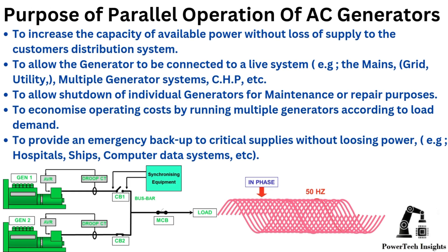Purpose of parallel operation of AC generators: To increase the capacity of available power without loss of supply to the customer's distribution system. To allow the generator to be connected to a live system, for example, a mains grid, utility, multiple generator systems, combined heat and power. To allow shutdown of individual generators for maintenance or repair purposes. To economize operating costs by running multiple generators according to low demand.